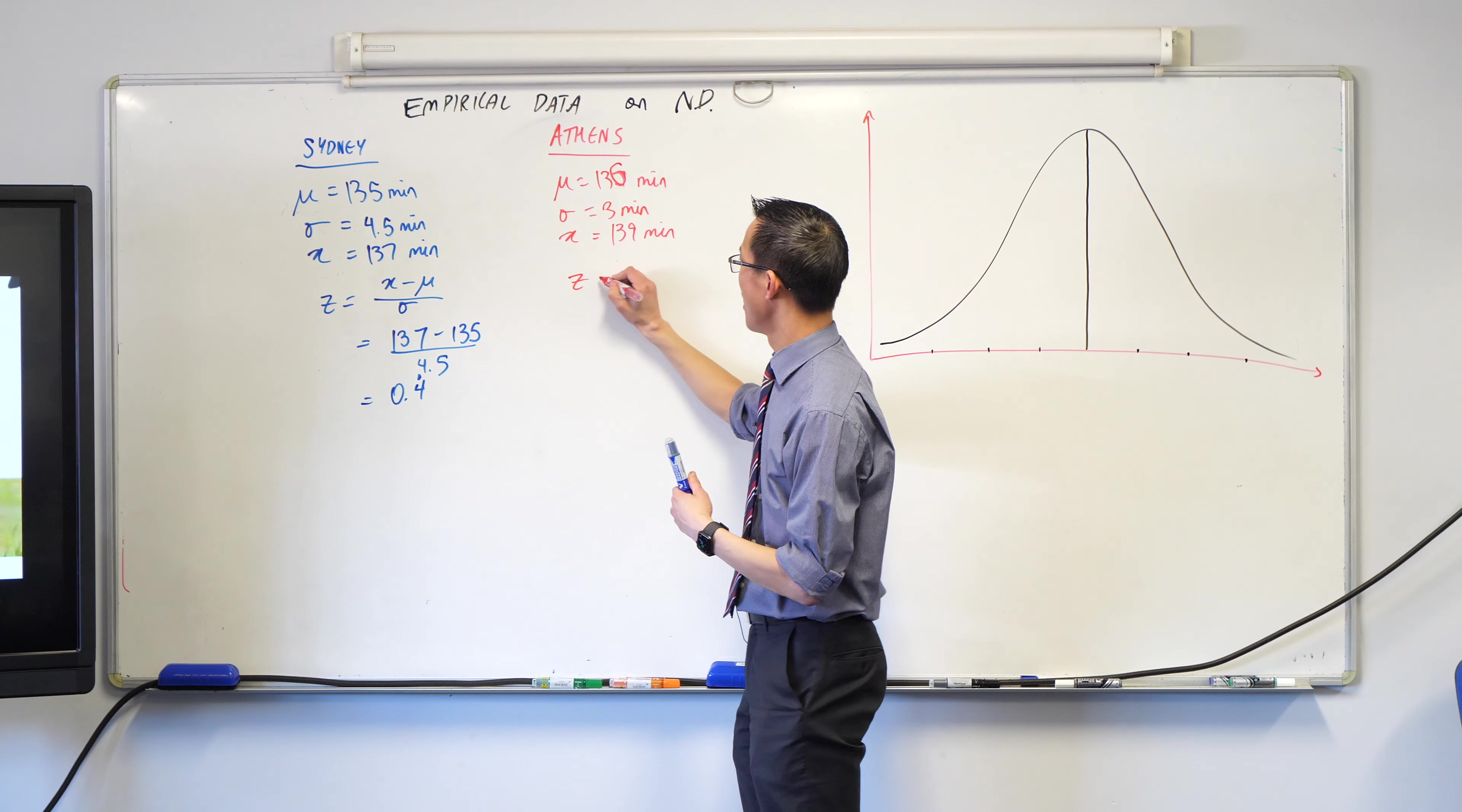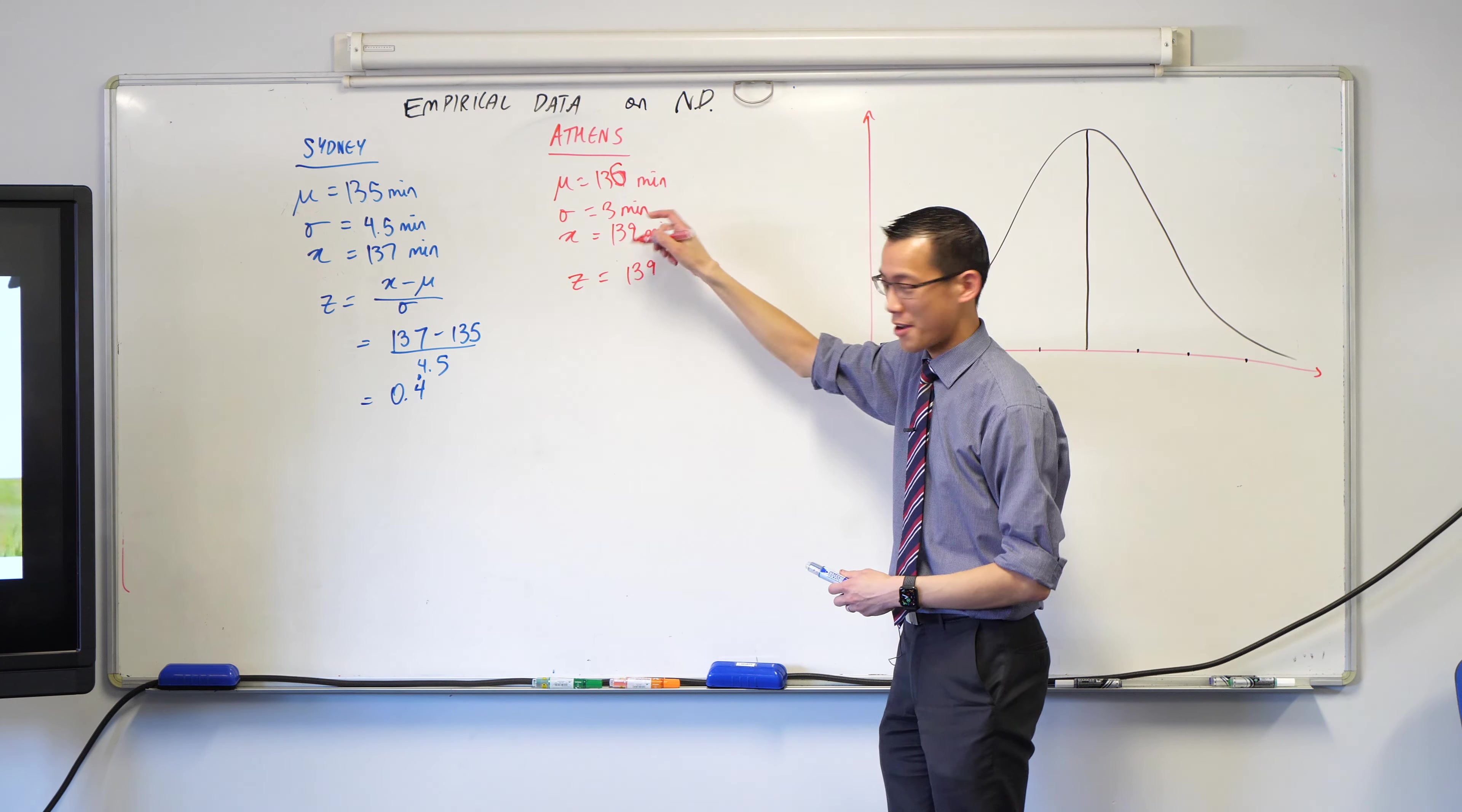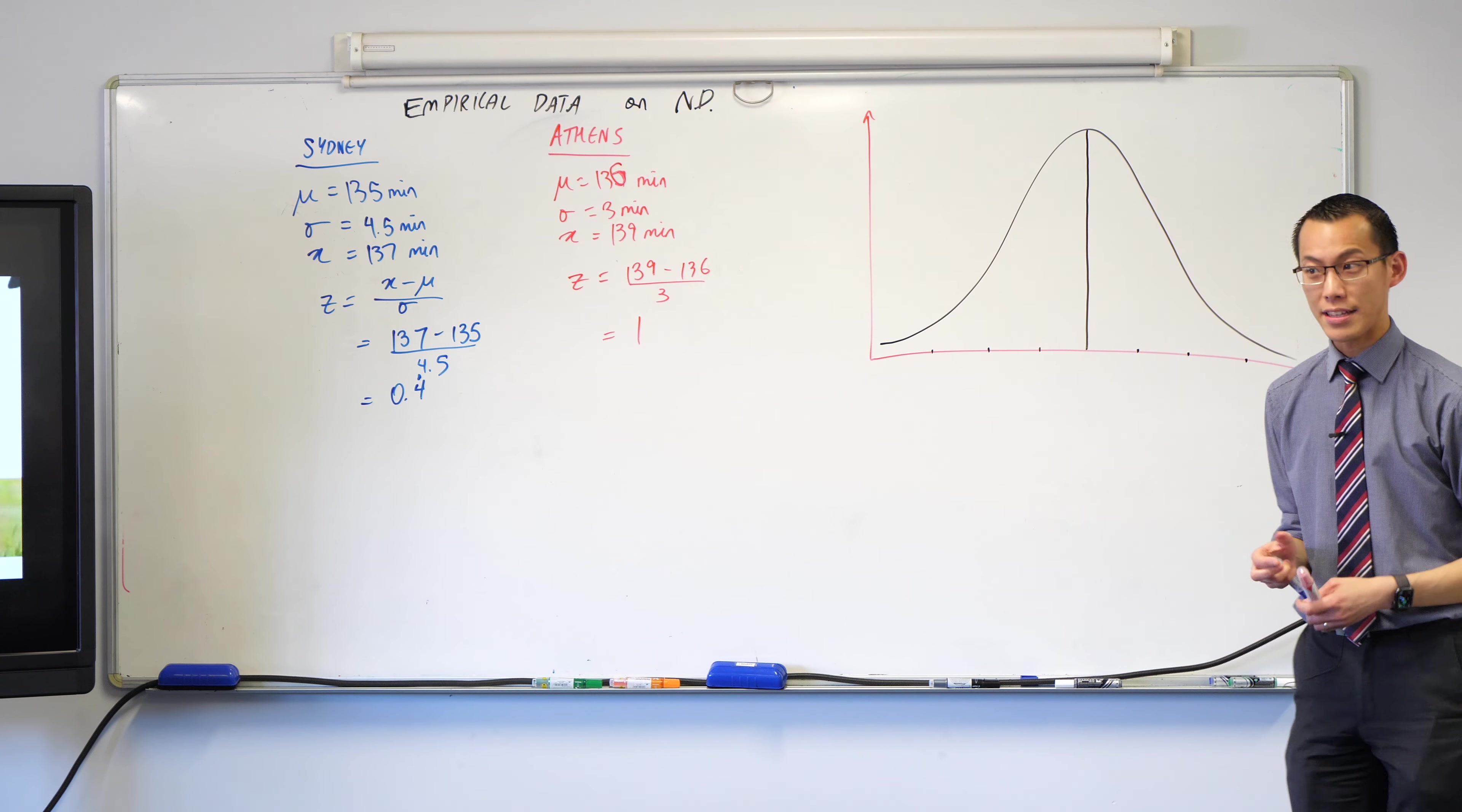Let's do the same for Athens. I'll go straight to the numbers since I have the formula. 139 minus 136, divided by 3. That's just 1. So I've got my Z-scores now.